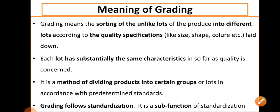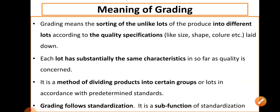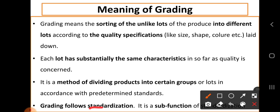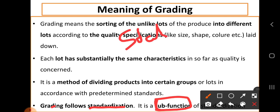Grading follows standardization — it is a sub-function of standardization. After standardization, grading comes. So once you decide the standards for a produce, then you can go for the grading process. It is also called a sub-function or under-function of standardization.